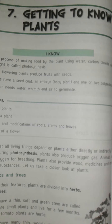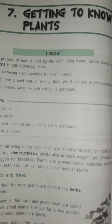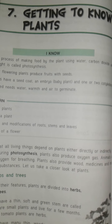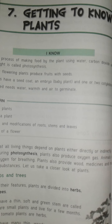There are five different types of plants: these are trees, herbs, shrubs, creepers, and climbers. Plants that are very big and tall and have a strong, hard, and woody stem are called trees.